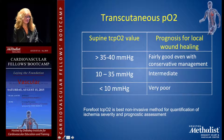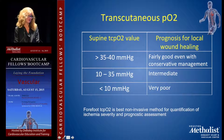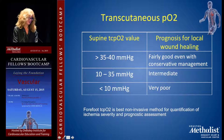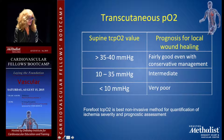If TcPO2 is less than 10, you need to either increase blood supply with an operation or endovascular procedure, or make the amputation level higher. What you don't want is to do a toe amputation, then a TMA, then an ankle procedure, and end up five operations later with a below-knee amputation — that's not reasonable for the patient.